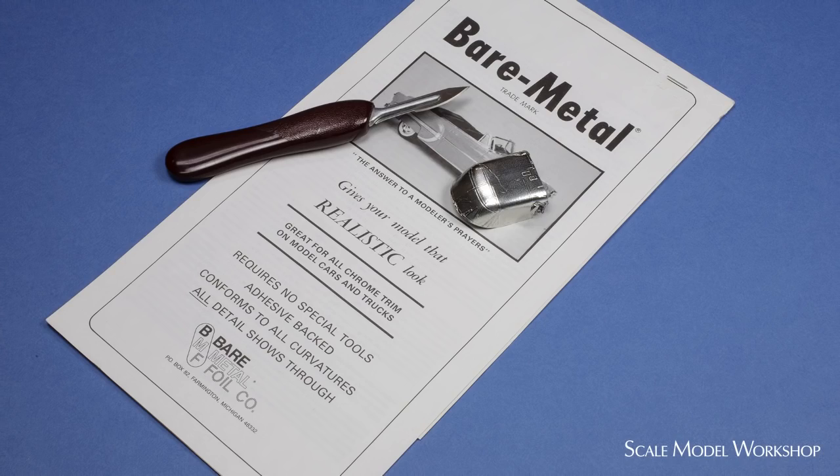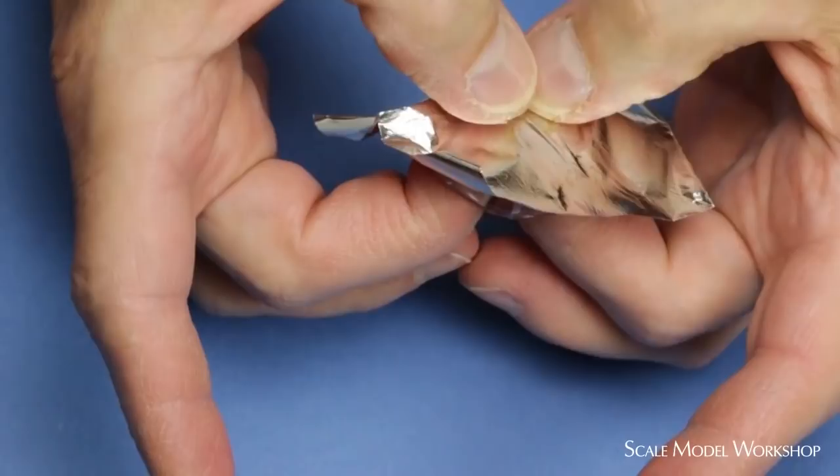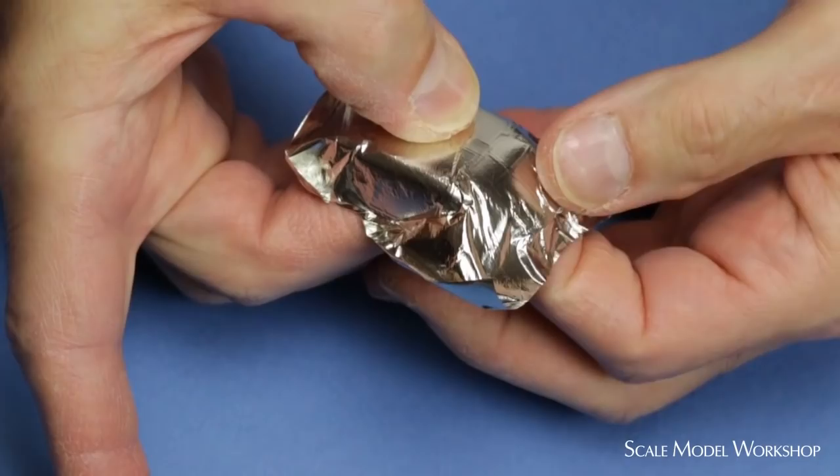The process begins by covering the canopy with adhesive foil. Any wrinkles can be burnished flat and won't affect the final result.